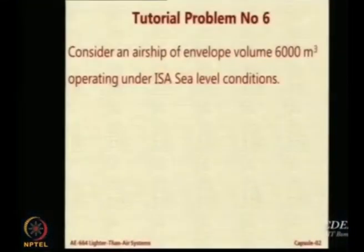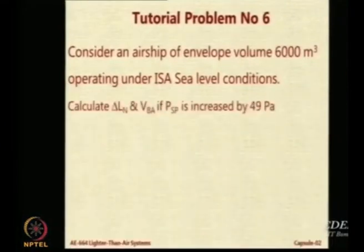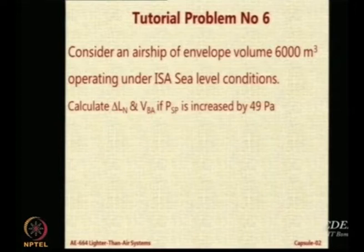Let us look at this particular expression. The same airship of 6000 cubic meters operating under the same conditions — ISA. If the PSP is increased by 49 Pascal, calculate the delta N and volume of ballonet air.